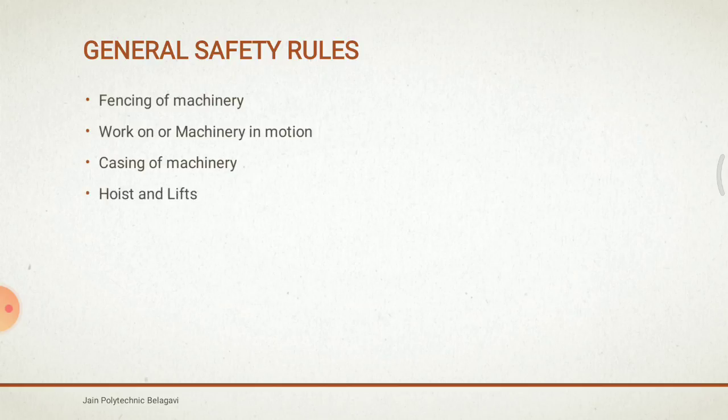Hoists and lifts: every hoist and lift shall be of good mechanical construction and of adequate strength. They shall be properly maintained and examined regularly. They shall be marked with the maximum safe working load. Every hoistway and liftway shall be sufficiently protected by an enclosure fitted with gates.